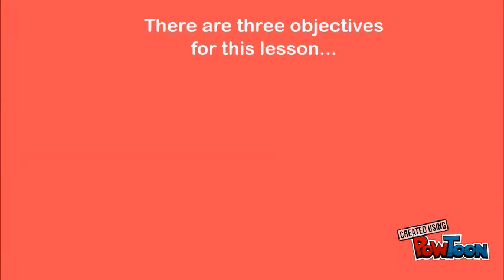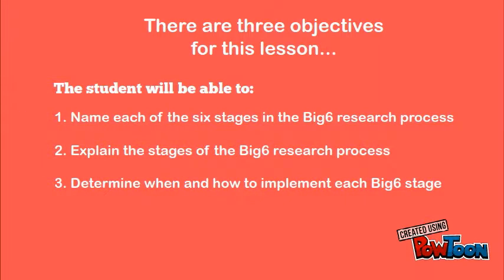There are three objectives for this lesson. The student will be able to name each of the six stages in the Big Six research process, explain the stages of the Big Six research process, and determine when and how to implement each Big Six stage.